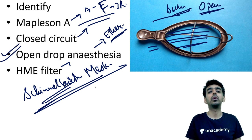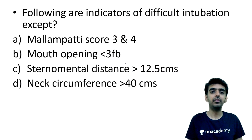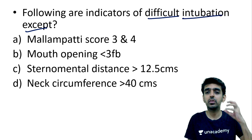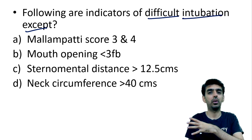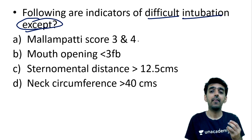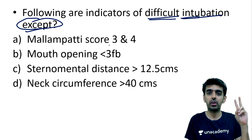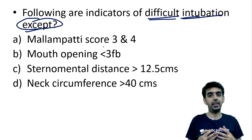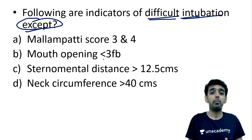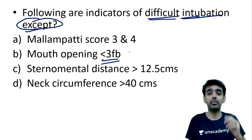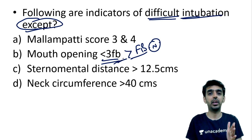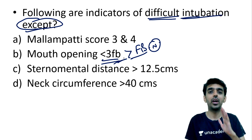Next question: which of the following are indicators of difficult intubation — except? The word 'except' is the spoiler here. Mallampati score 3 and 4 are markers of difficult intubation — the higher the score, the more difficult the intubation. Mouth opening of less than three finger breadths indicates a difficult airway; normal is more than three finger breadths. A reduced mouth opening makes introducing the laryngoscope via the oral cavity difficult.